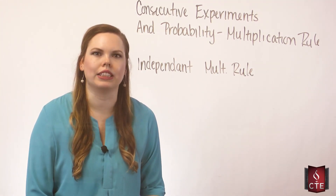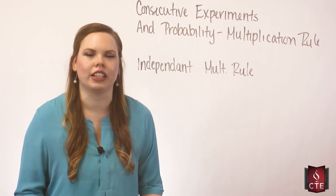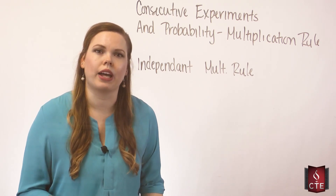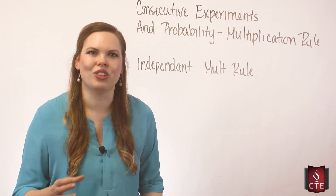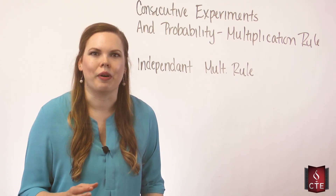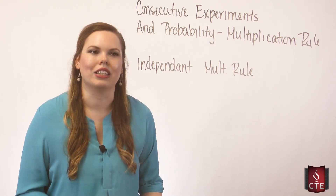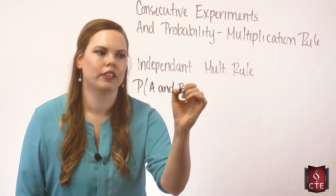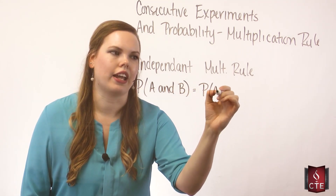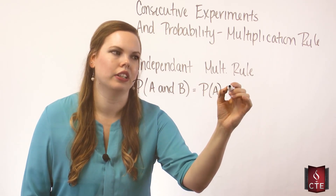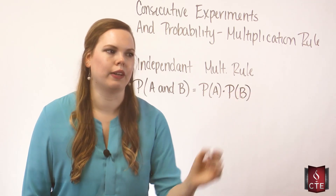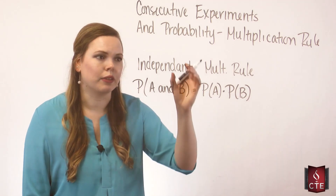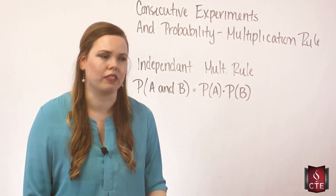Two events being independent means that the second event is not affected by the first event occurring. Rolling dice and flipping coins are independent because each time you pick up that coin or die, the probability resets - there's no effect of what happened before on what's happening now. When events are independent, the probability of A and B equals the probability of A multiplied by the probability of B.